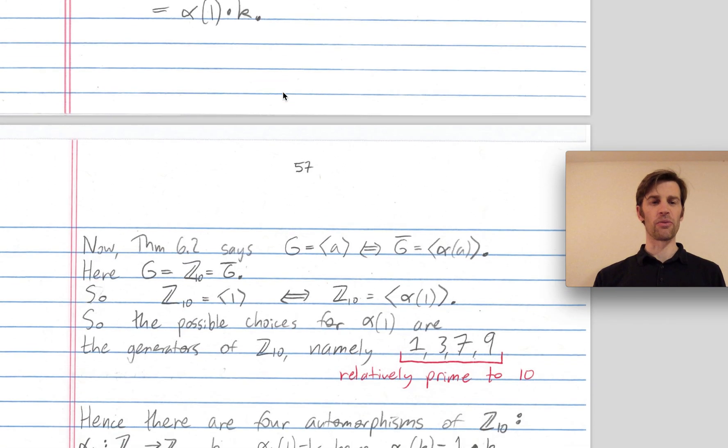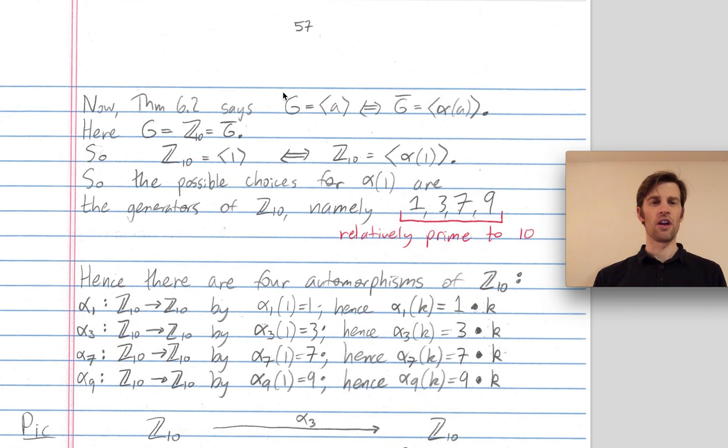We saw last time what the automorphisms of Z mod 10 are. If two groups are isomorphic then one is cyclic if and only if the other is cyclic, and furthermore a generator of one cyclic group under an isomorphism has to get mapped to a generator of the other cyclic group. The other generators of Z mod 10 are just the numbers relatively primed to 10, so 1, 3, 7, and 9.